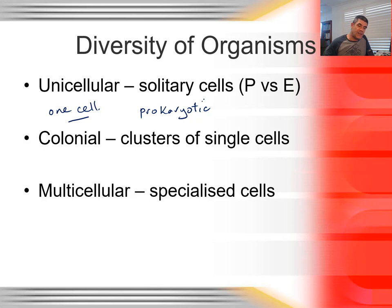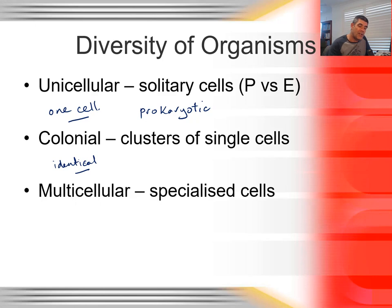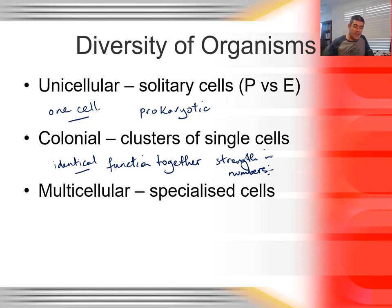Colonial cells are clusters of single cells — usually identical cells. There may be a small amount of specialisation, but most of the time when we're talking strictly about colonial organisms, we're looking at identical cells that function together — strength in numbers, you might call it. The important thing is that the cells themselves still retain the integrity of a unicellular organism, but together they can function as a group of cells. We'll look at an example of that in a moment.